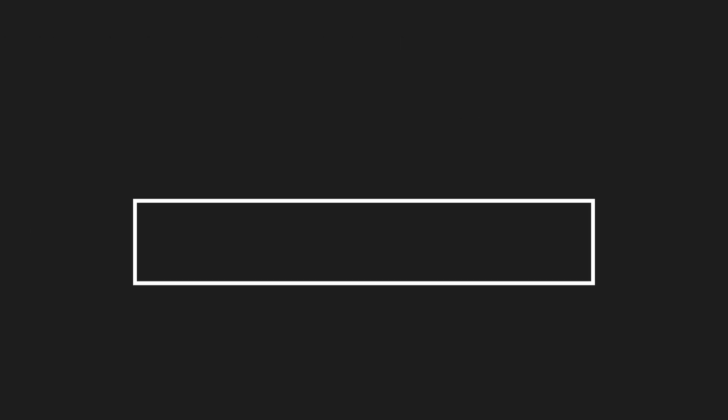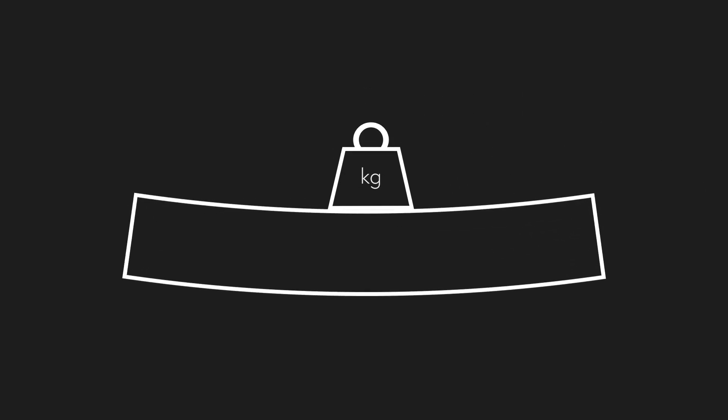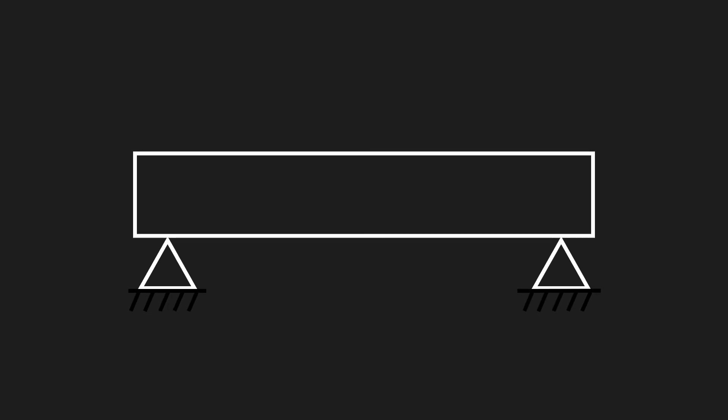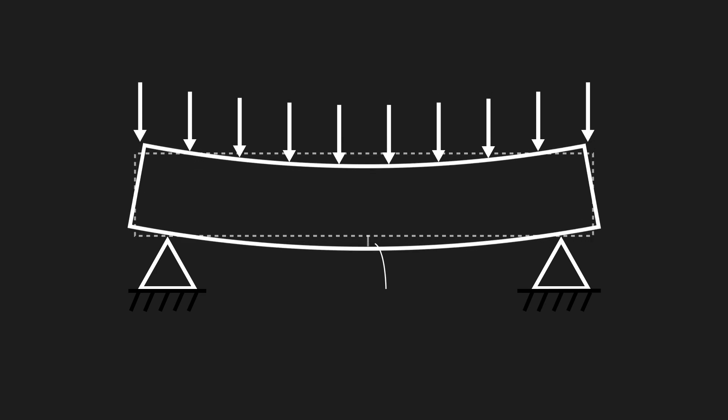One way we can analyze the strength of a beam is by measuring how much it deflects or bends due to an applied load. Let's rest our beam here on some supports at either end and apply uniformly distributed load across it. We can measure the displacement in the middle of the beam with this equation here.